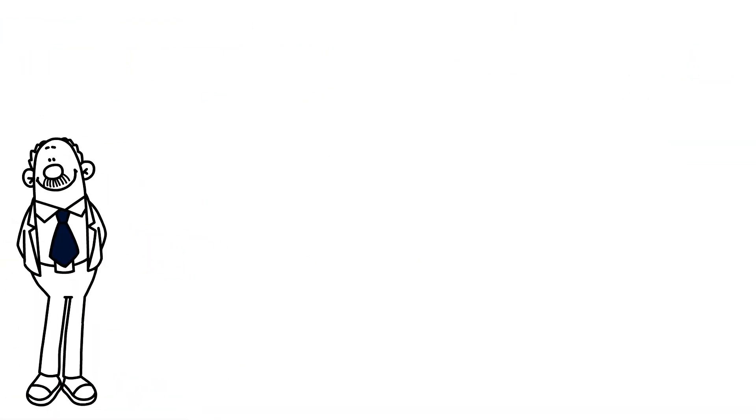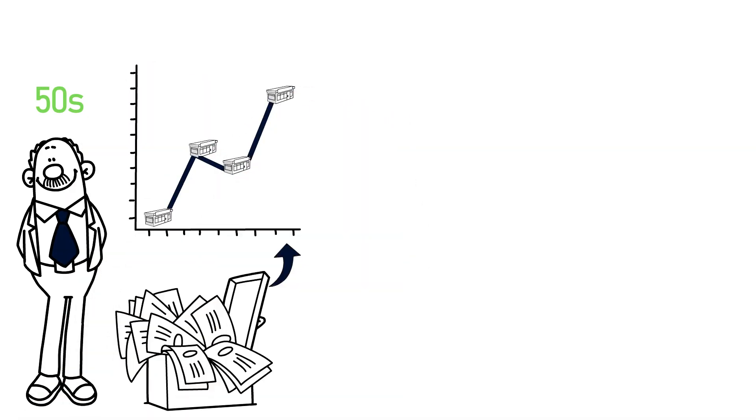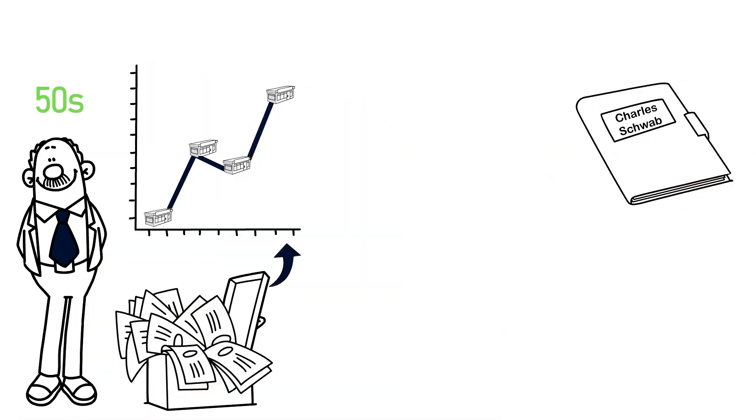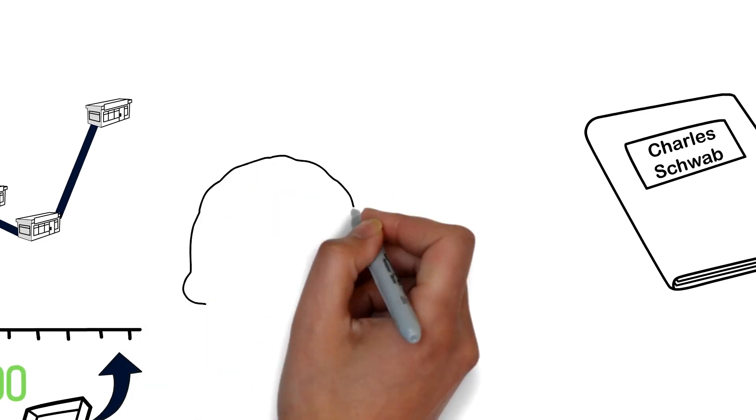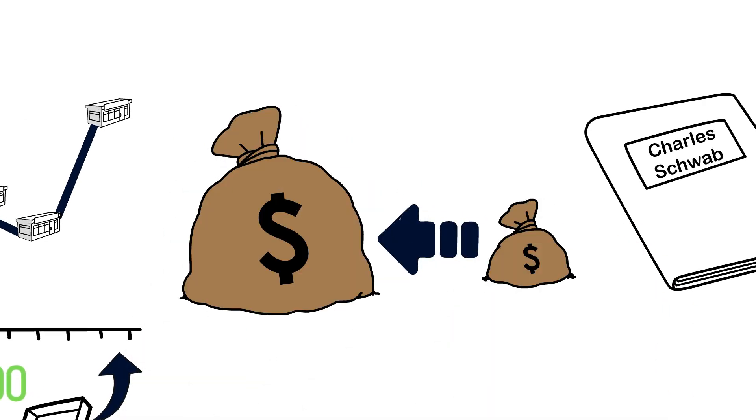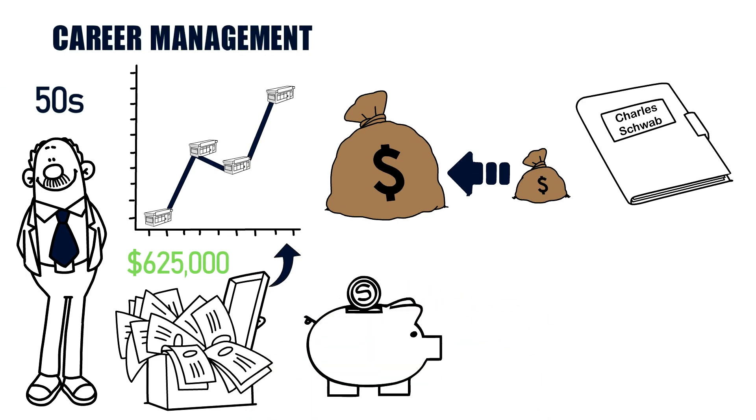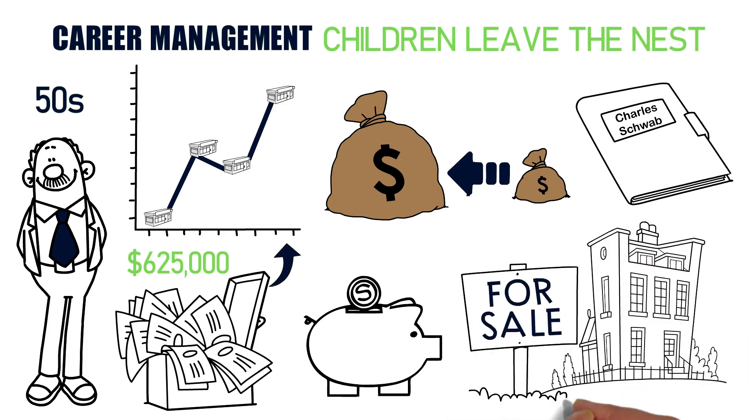Finally, for those in their 50s, the average net worth continues to increase. A report by Charles Schwab found that the average net worth for someone in their 50s is around $625,000. This is likely due to a combination of factors such as increased earning potential and career management, the ability to save more aggressively as children leave the nest, and possibly even the sale of a home or other assets.